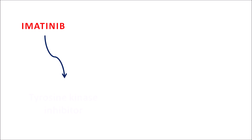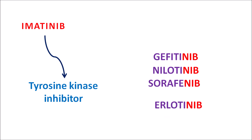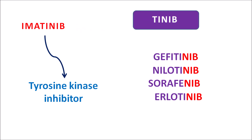What is imatinib? Imatinib is an anti-cancer agent classified as a tyrosine kinase inhibitor. We have many drugs within this chemical category like gefitinib, nilotinib, sorafenib, and erlotinib. All these end with the same suffix '-nib', which indicates they are tyrosine kinase inhibitors. Specifically, imatinib has the suffix '-tinib', which clearly denotes it is a tyrosine kinase inhibitor.